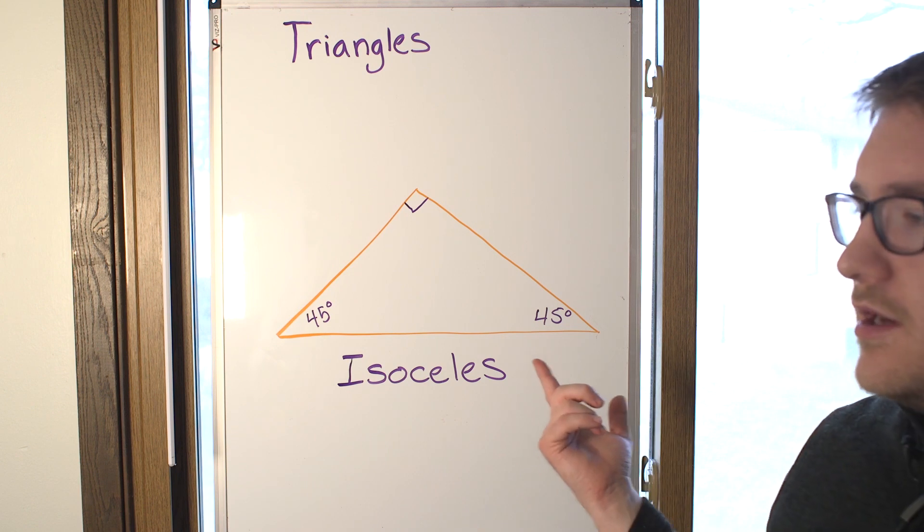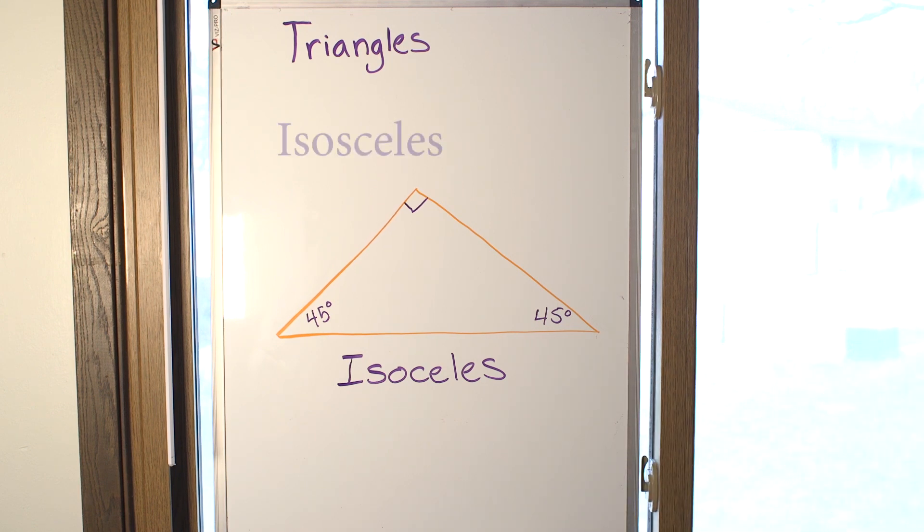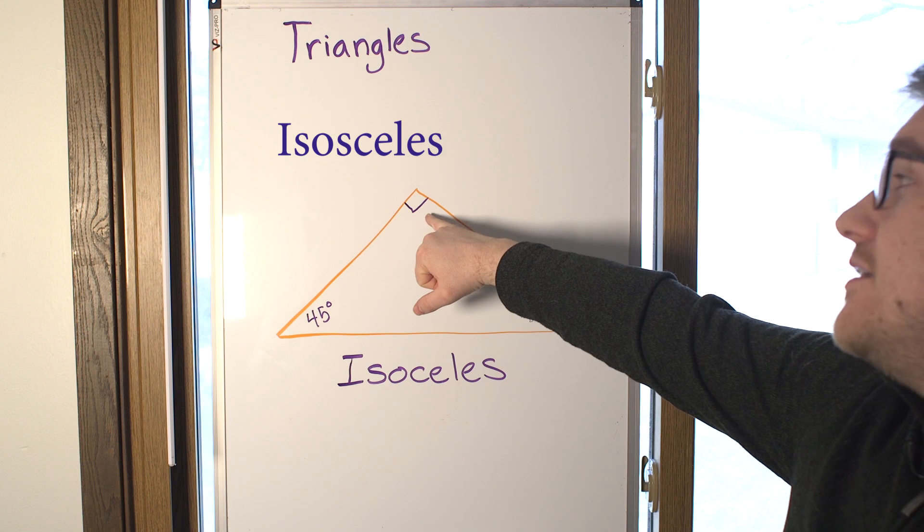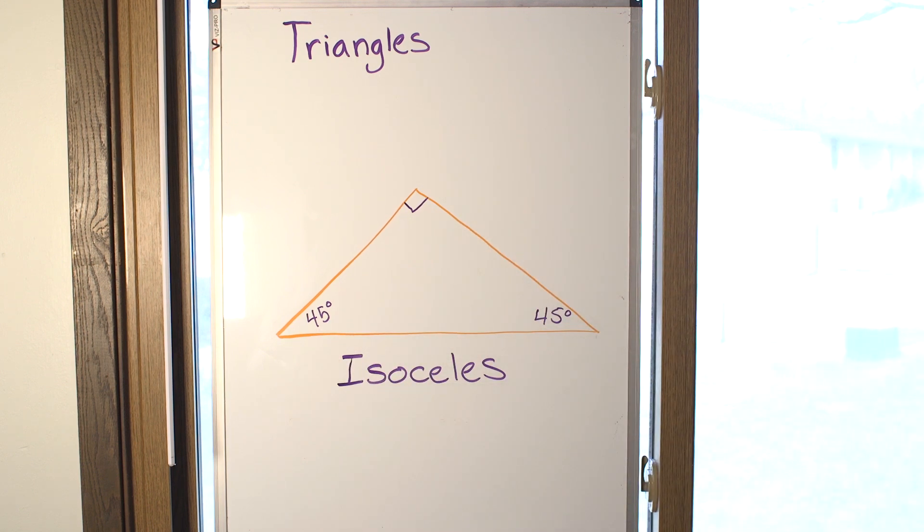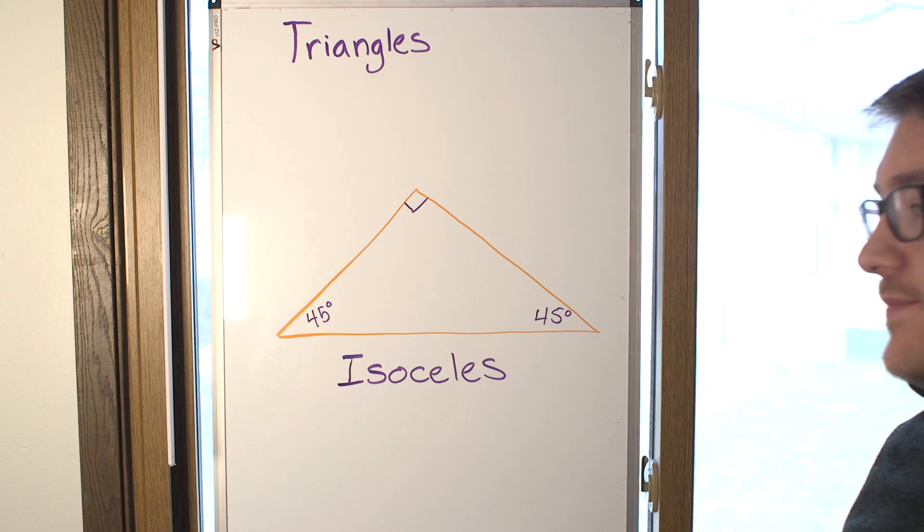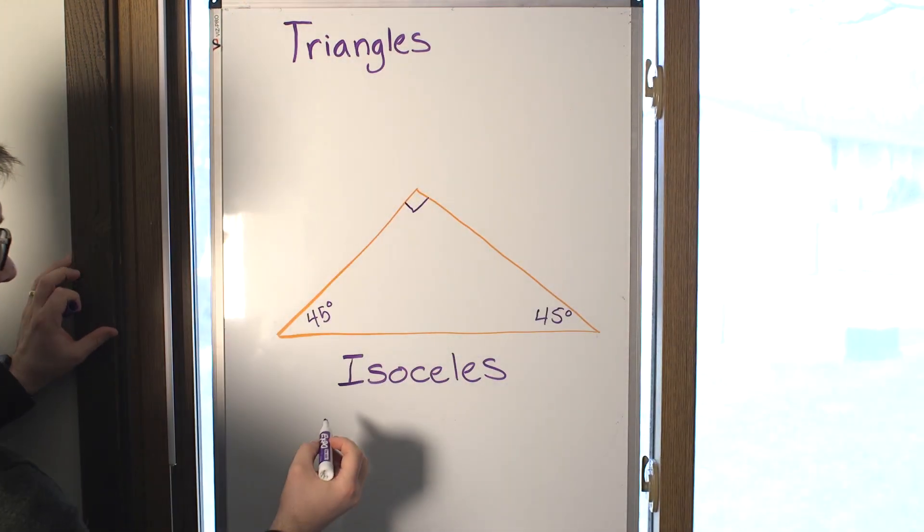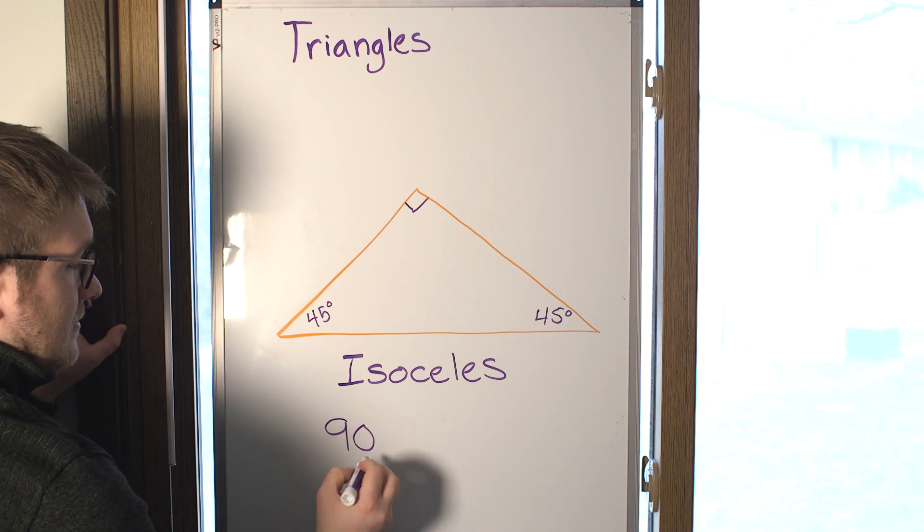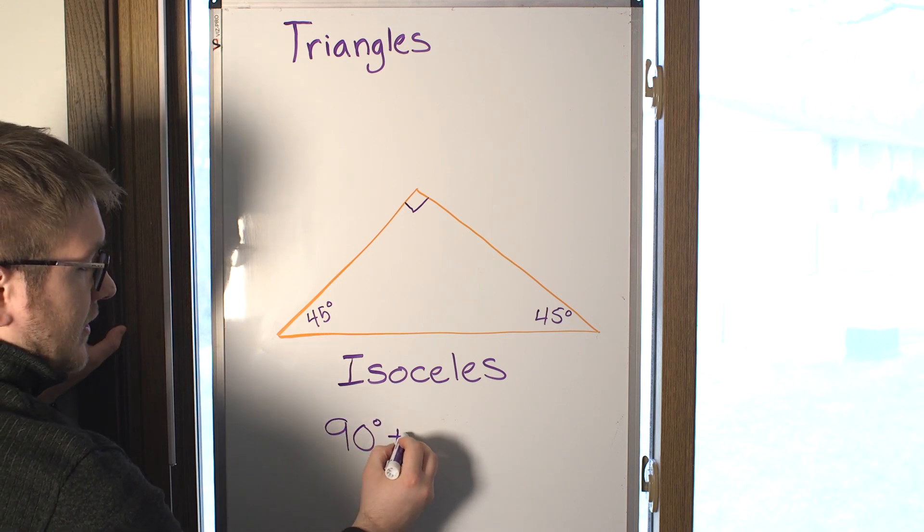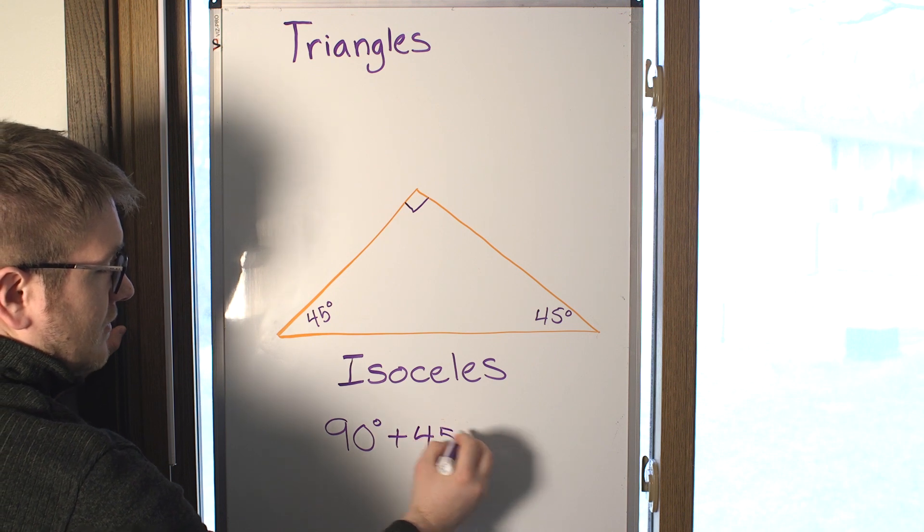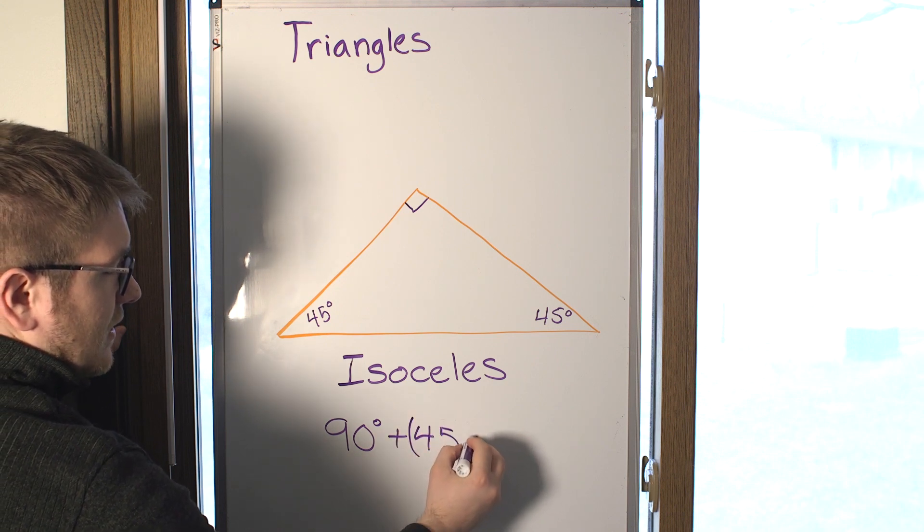Okay, the next triangle that I want to show you is an isosceles triangle, and it has a 90 degree angle and two 45 degree angles. So, what I would want you to do is to add these numbers and to find the sum of those angles. The sum of all the angles in the triangle would become 90 plus 45 times 2.